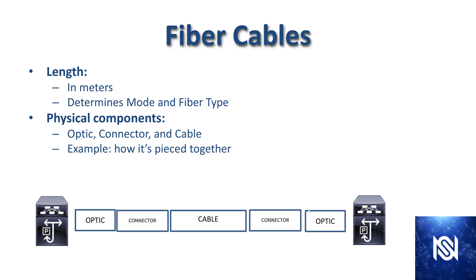All of these elements must be compatible with each other. The optic must be compatible — the optic that you're plugging directly into the Nexus switch must be compatible. The connector fits a specific type of optic, so the optics you order from Cisco have to match the connector type that is going to be on the cable. There are also decisions to be made with the cable itself. The main point is that there are three elements you have to understand if you're going to be putting together a solution with fiber optic cables.